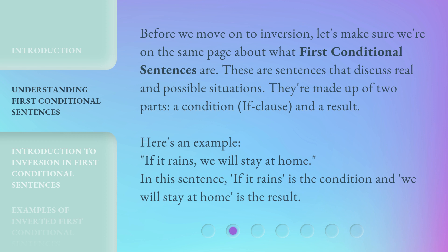Before we move on to inversion, let's make sure we're on the same page about what first conditional sentences are. These are sentences that discuss real and possible situations. They're made up of two parts: a condition (if clause) and a result. Here's an example: 'If it rains, we will stay at home.' In this sentence, 'if it rains' is the condition and 'we will stay at home' is the result.